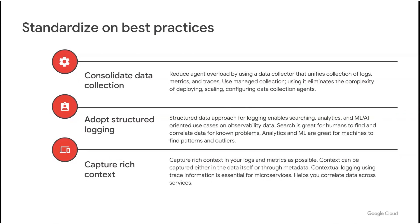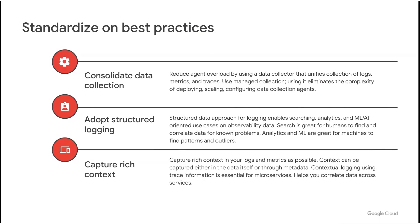Lastly, as applications become more complex, it becomes increasingly important to collect richer context from your signals. Whether you collect that through labels in metrics or through fields in structured log events, this context helps you slice and dice the data and correlate it amongst different signals. It is increasingly critical to capture a unique identifier like a trace ID that spans a user request across all services, making troubleshooting much easier. Let me introduce a new capability that helps you take advantage of structured logs and all the rich context you can capture from them.